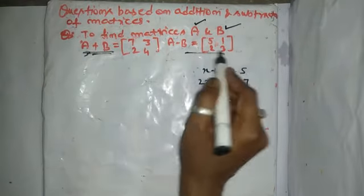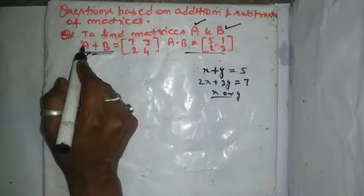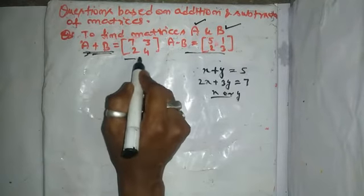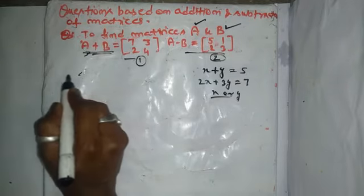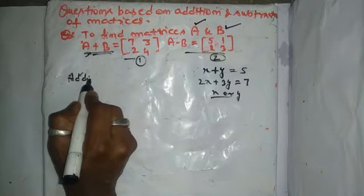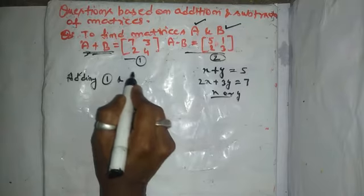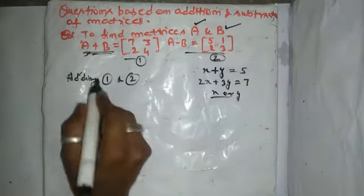So, let's apply addition operation here. Adding matrix, I am assuming this is 1 and this is matrix 2. Adding matrix 1 and 2. What we got?